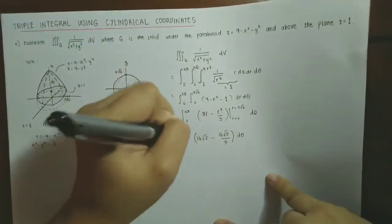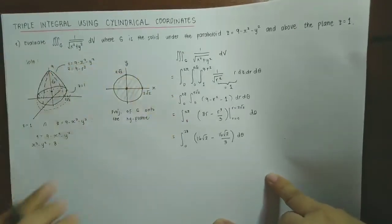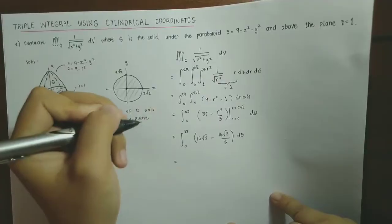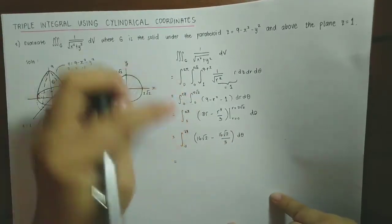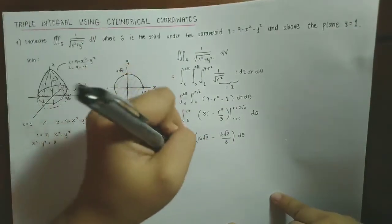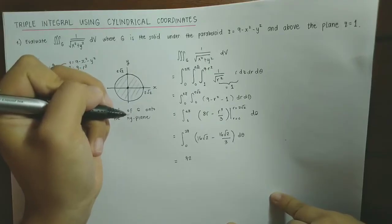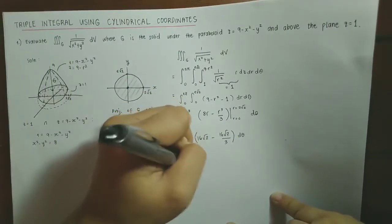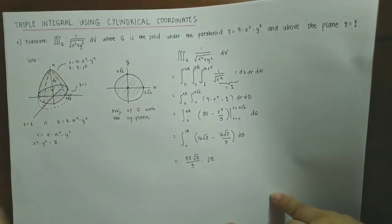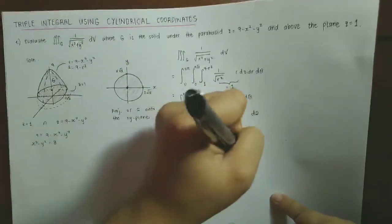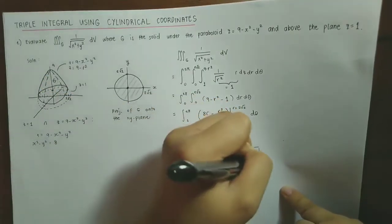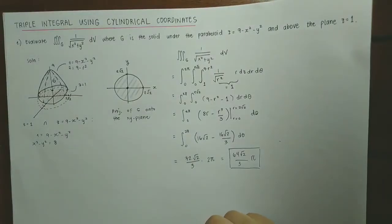Then we integrate with respect to θ from 0 to 2π. The inner expression is a constant: 16√2 - 16√2/3 = 48√2/3 - 16√2/3 = 32√2/3. Multiplying by 2π gives 64π√2/3. That is our final answer.